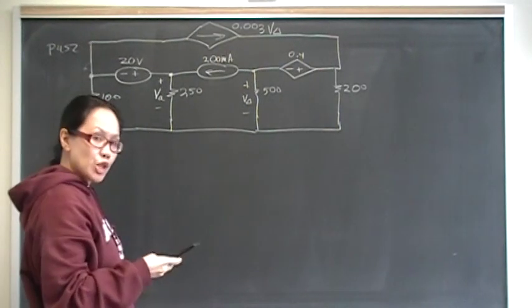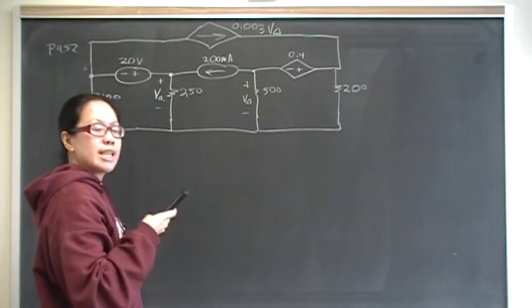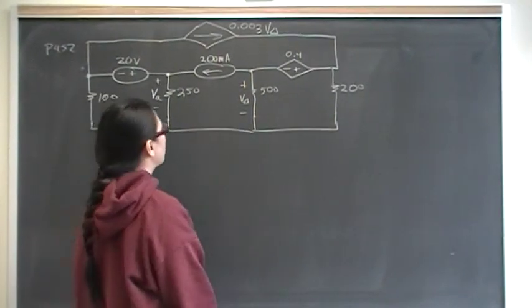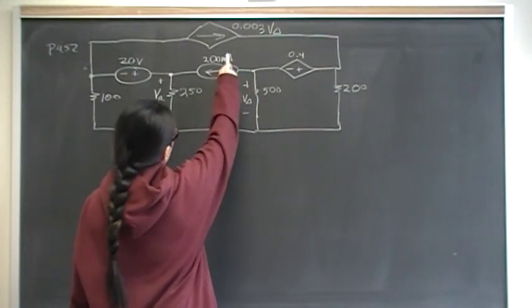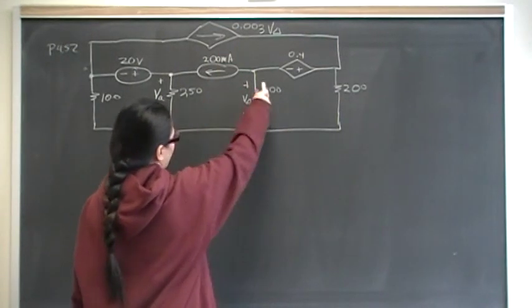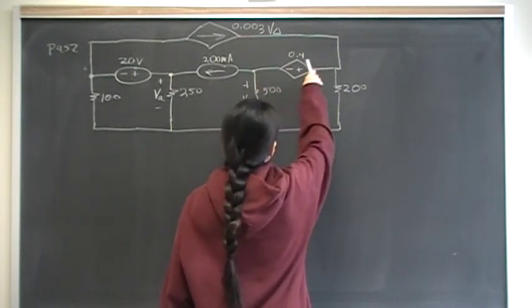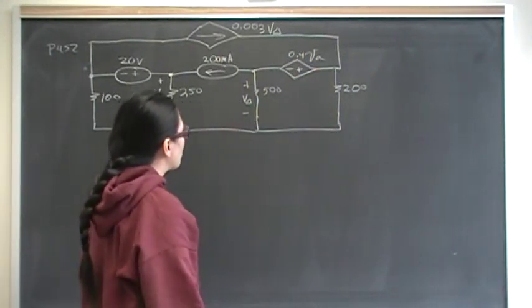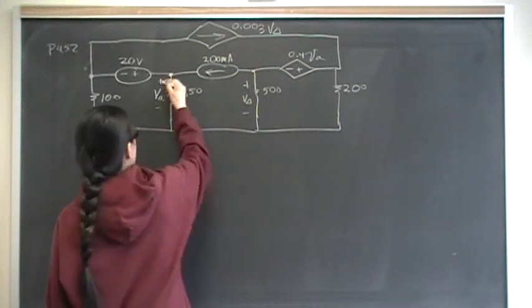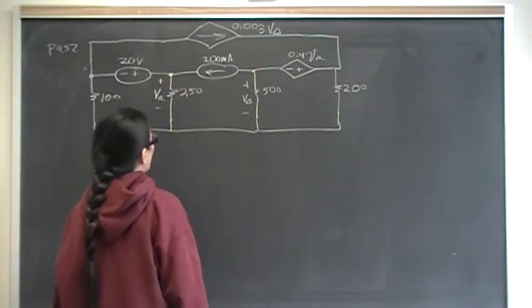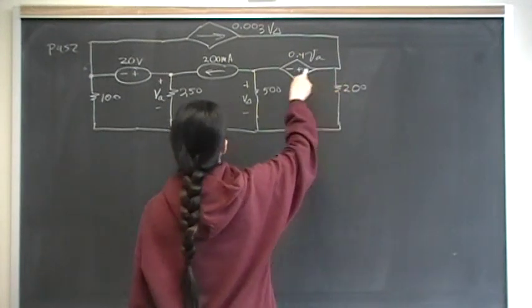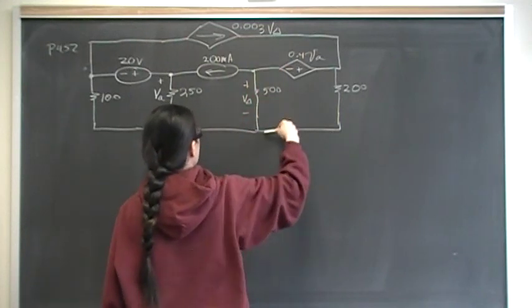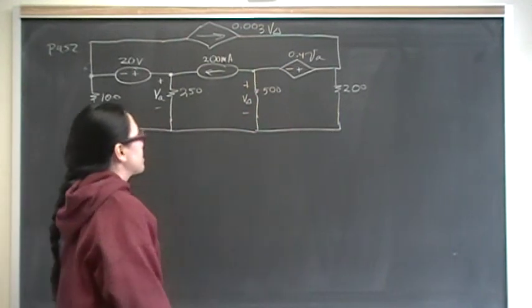Sorry, I got a text and I always have to check it in case the school is calling me to go pick up my son — that's not the case, but I'm always going to check my text even if I'm filming. So, a 200 milliamp independent current source there, 500 ohms, a dependent voltage source with a value of 0.4 VA — and VA is the voltage drop across the 250 ohm resistor — a 250 ohm resistor, and a dependent current source with value 0.003 V delta, where V delta is the voltage drop across the 500 ohm resistor.